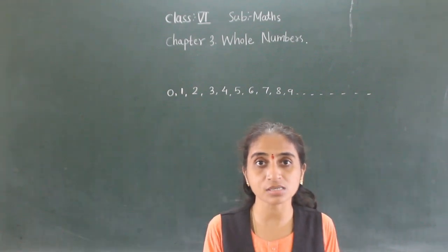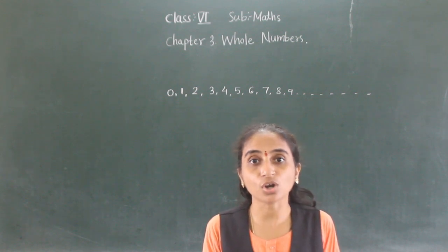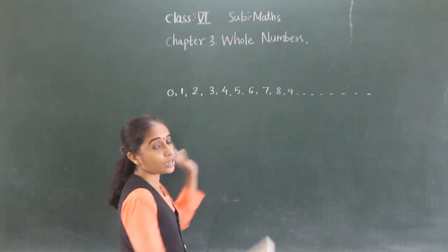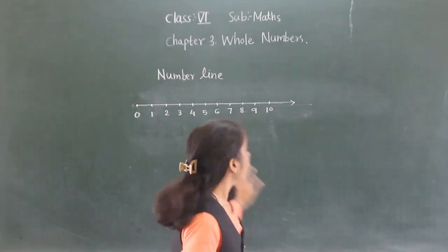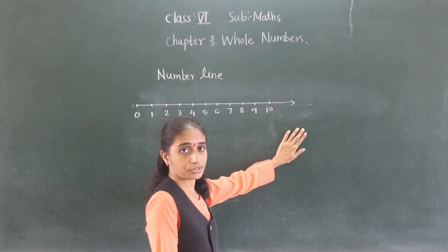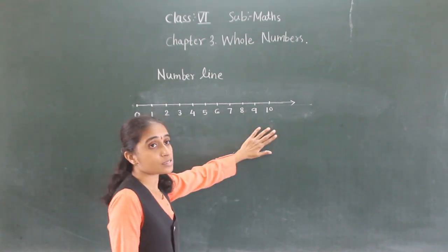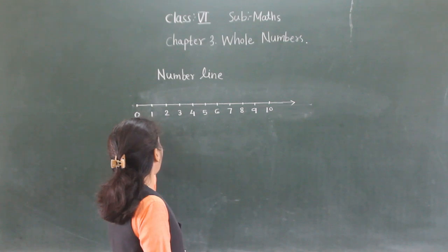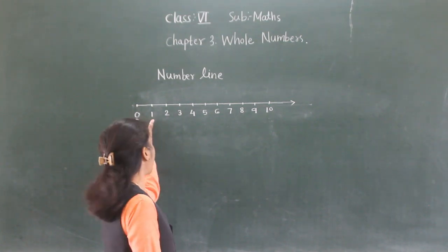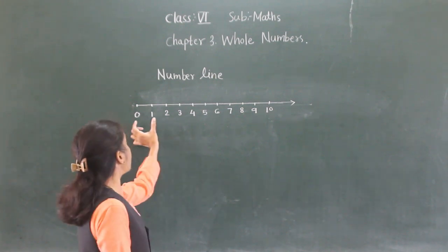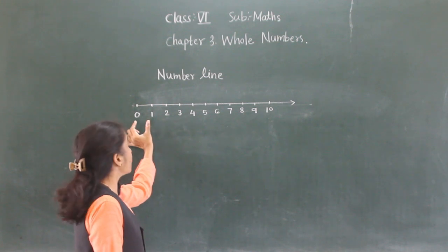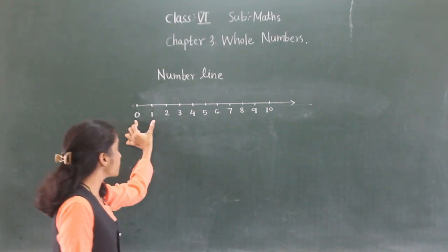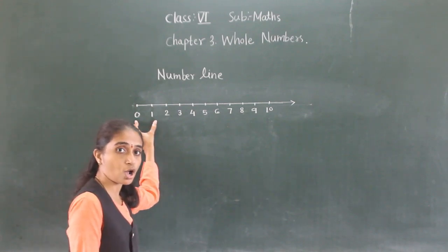The collection of natural numbers along with zero forms a collection of whole numbers. Now I will explain the number line. A number line is a horizontal line marked at equal intervals. It starts with zero, and the next number is one. The distance between zero and one is called the unit distance.